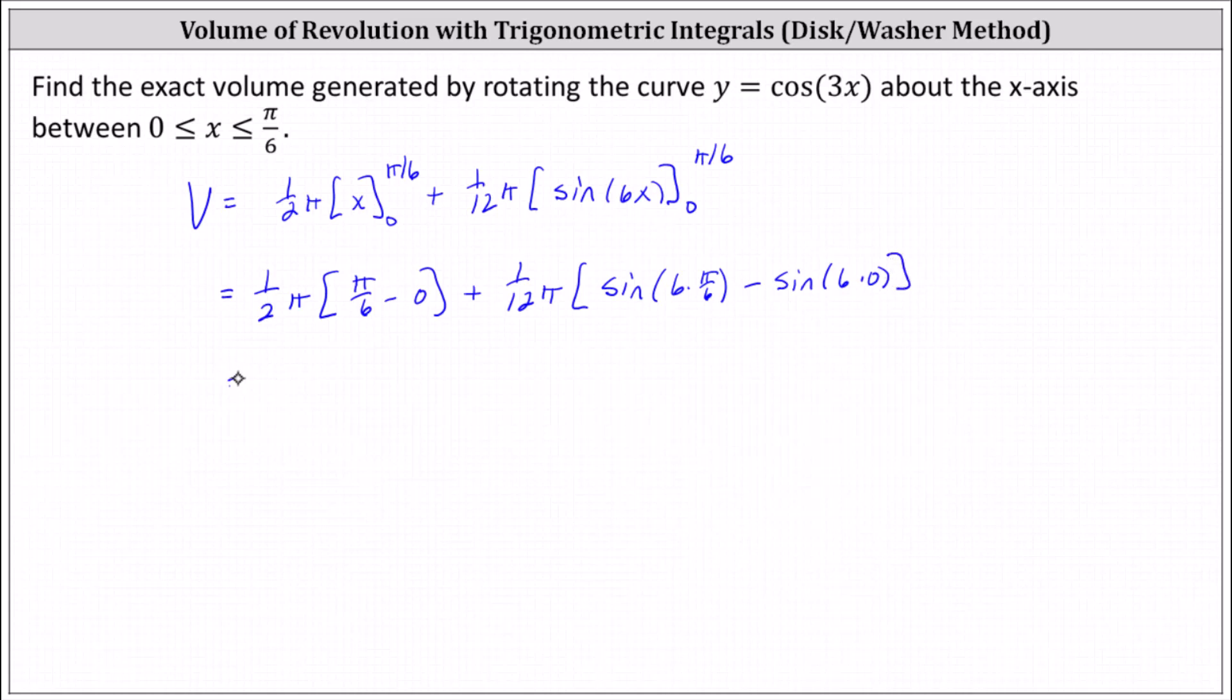So for the first part, we have 1 half pi times pi divided by 6, and then plus... This simplifies to sine pi, which is 0. This simplifies to sine 0, which is also 0. So here we have just plus 0, and 1 half pi times pi divided by 6 is equal to pi squared divided by 12, and this is volume, so we can say this would be cubic units.